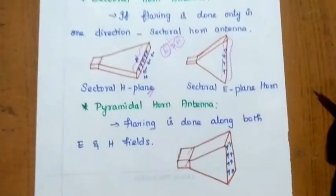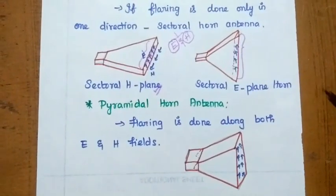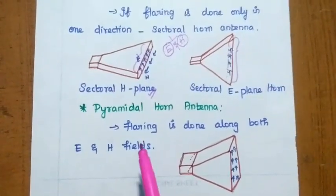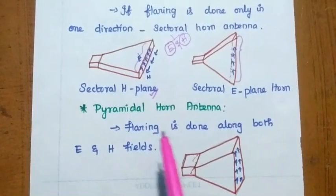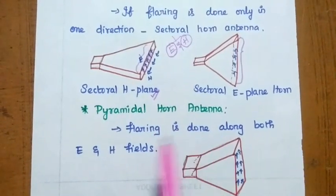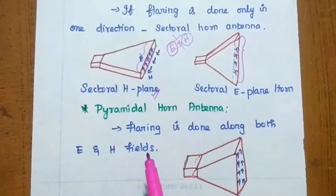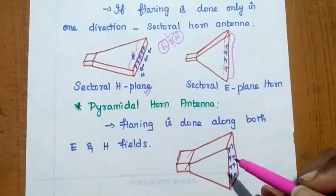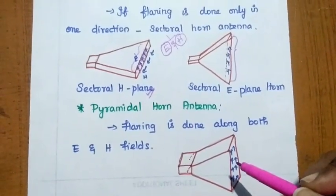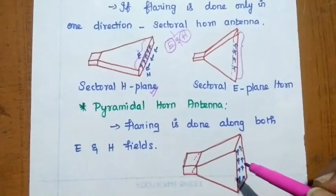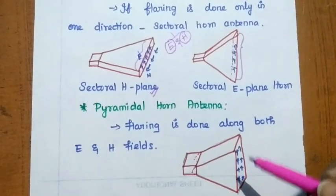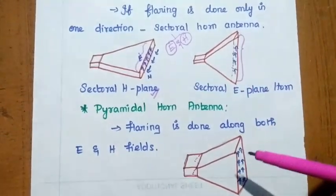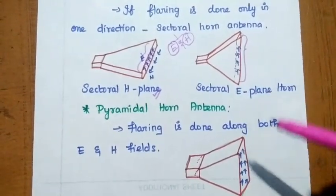The next type is the pyramidal horn antenna, where the flaring is done along both E and H fields. That is why it is called the pyramidal horn antenna.